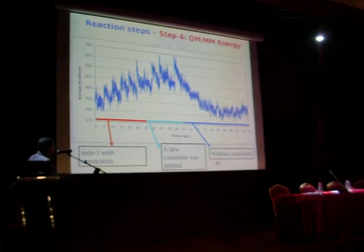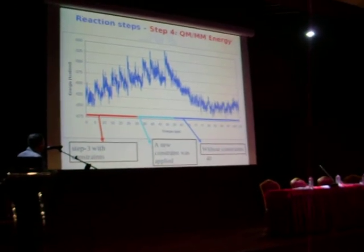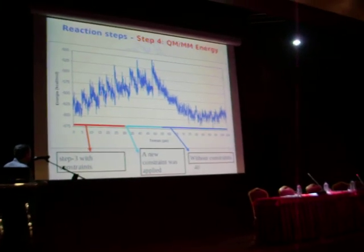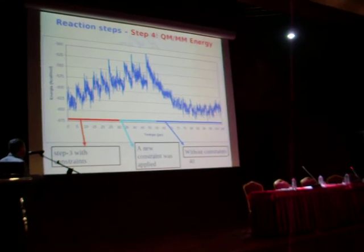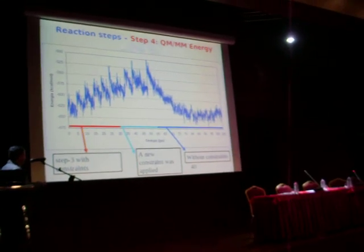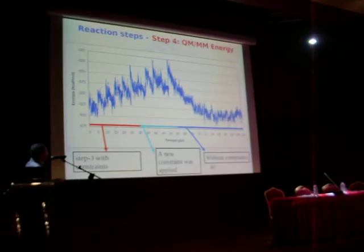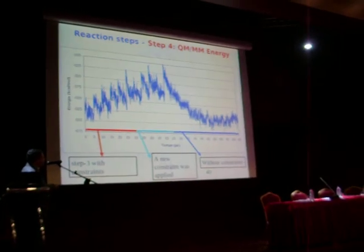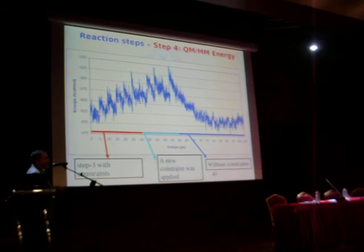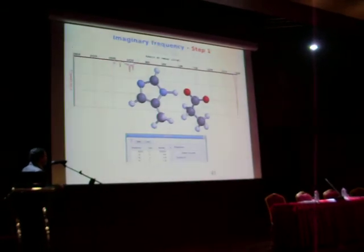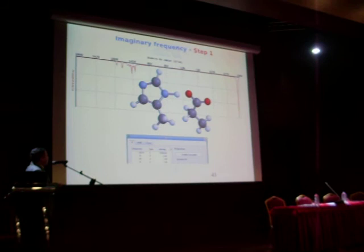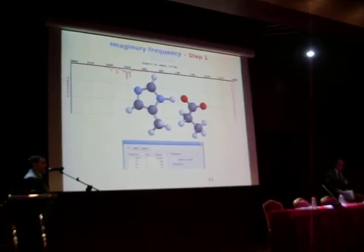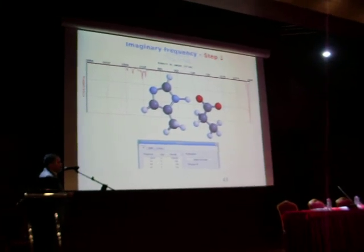In the red line, we show the QMMM energy with initial constraints; in the green line, a new constraint was applied; and in the blue line, the result without constraints.